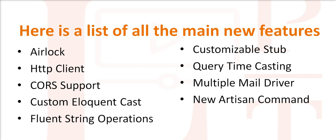The second one is the HTTP client. The HTTP client is used for HTTP requests, so you can easily make a request to an API endpoint. The HTTP client provides all methods like GET and POST, and it also provides header methods as well, so you can easily make a request using the HTTP client in Laravel 7. The third one is CORS support — Laravel 7 now supports CORS.